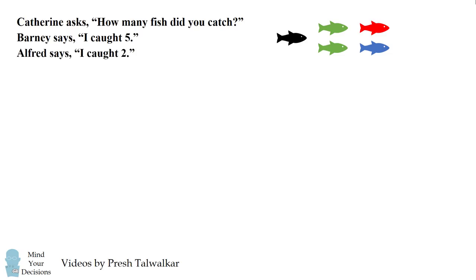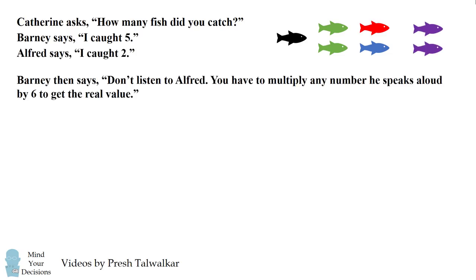Alfred says, I caught two. Barney then says, don't listen to Alfred. You have to multiply any number he speaks aloud by six to get the real value.